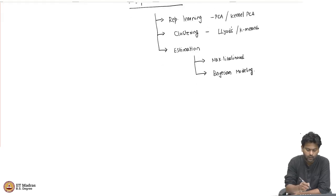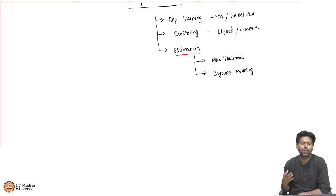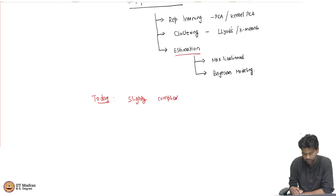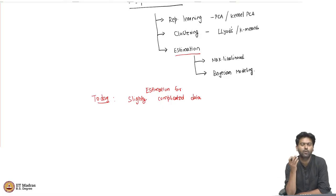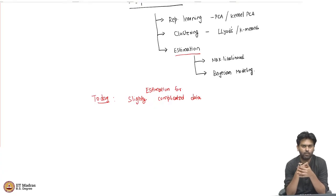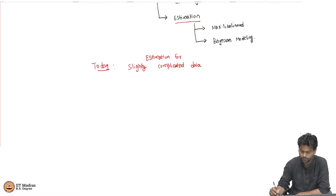Today we want to continue our discussion about estimation and look at a slightly more realistic type of data to model in an unsupervised way. For illustrative purposes we'll use one-dimensional data, but everything will carry forward to higher dimensions. Whatever we discussed for maximum likelihood and Bayesian estimation works for high-dimensional data too — it's just easiest to explain in one dimension.